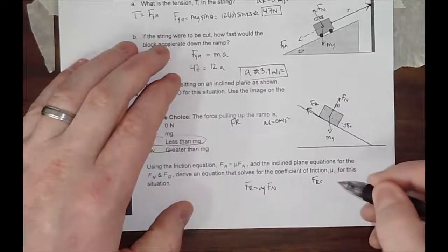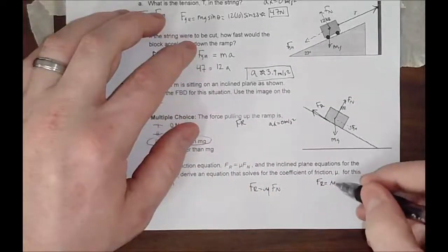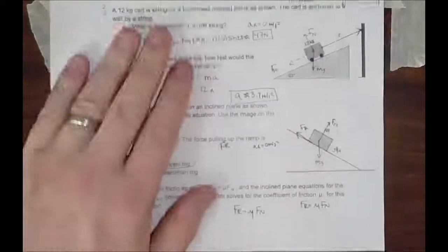We know from the top, we know these equations, we can then plug them in. For friction, we're going to use mu mg cosine of theta, because this is our FN going up the ramp.